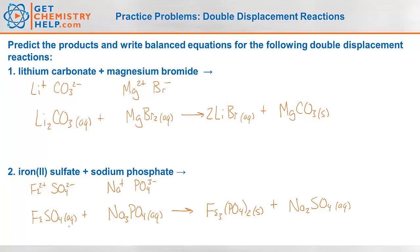Last step — we've got to balance this. One iron on the reactants, three on the products, so let's make this three irons. Now we've got three sulfates on the reactants, so we need three on the products. That also makes six sodiums on the products, so we need six on the reactants — three times two equals six. That also makes two phosphates, and we have two phosphates. So that's a balanced reaction.